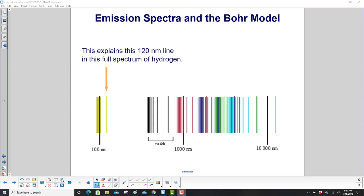We have here the hydrogen spectrum again, and we showed that 120 nanometer line, right? That was from you go n equal 2 down to n equal 1. Here's 100 nanometers, here's 1,000 nanometers, here's 10,000 nanometers. Right over here, you have a line at 120 nanometers. That's explained by that energy level diagram from the previous slide.